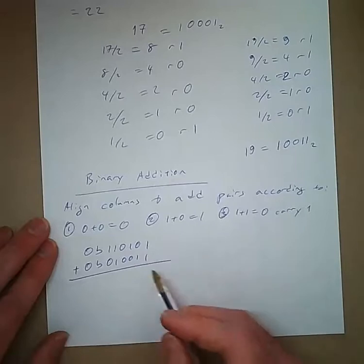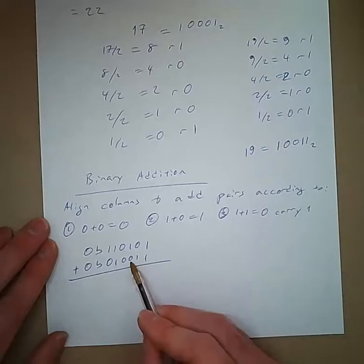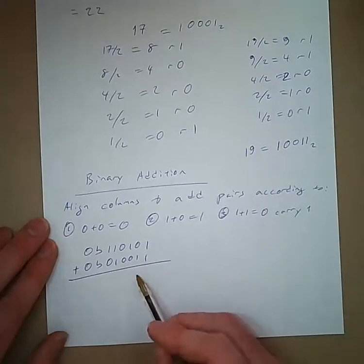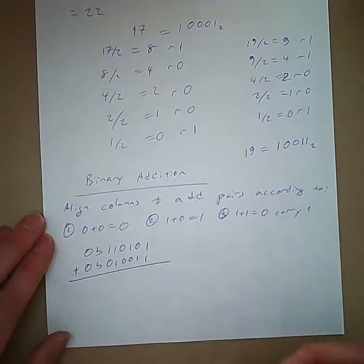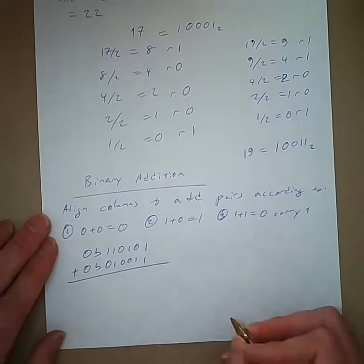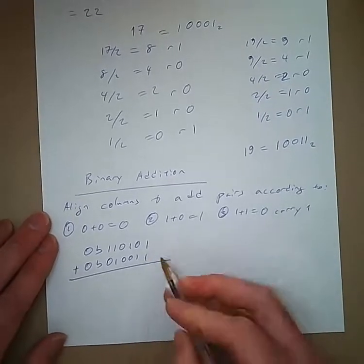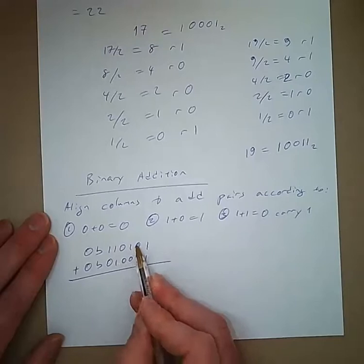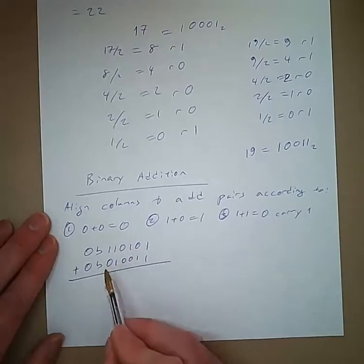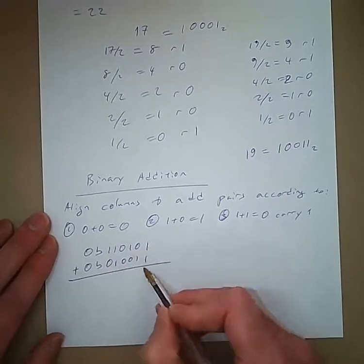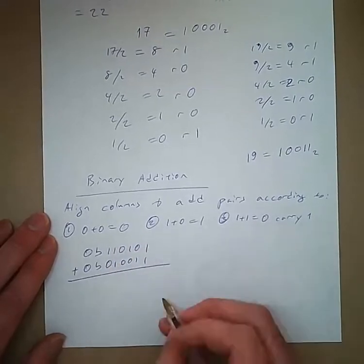We've got 53 plus 1 plus 2 plus 16. 53 plus 19, I would mean. We've got the columns. We've got all the bits aligned in columns. And now we'll add each column at a time according to these three rules.